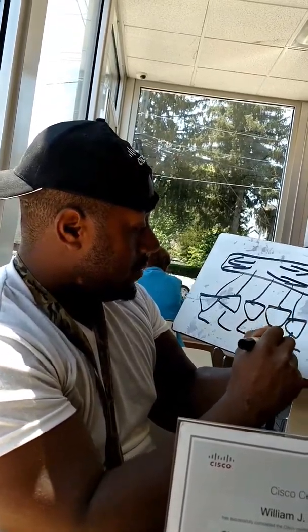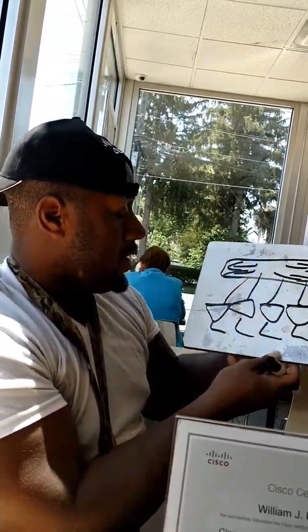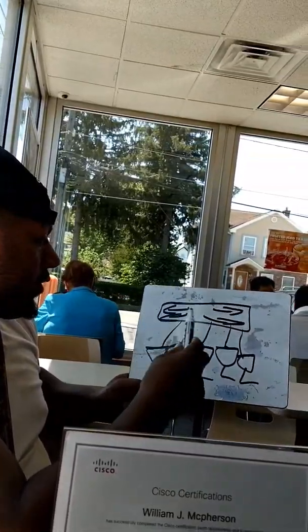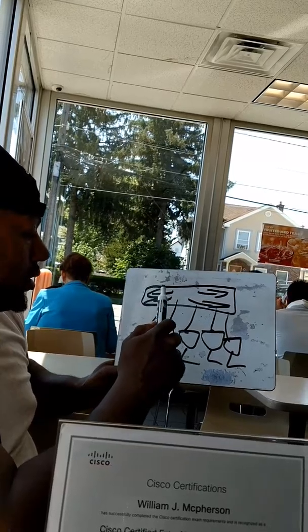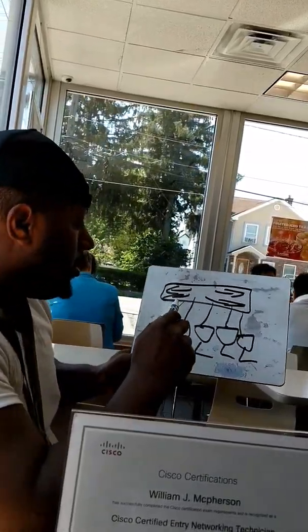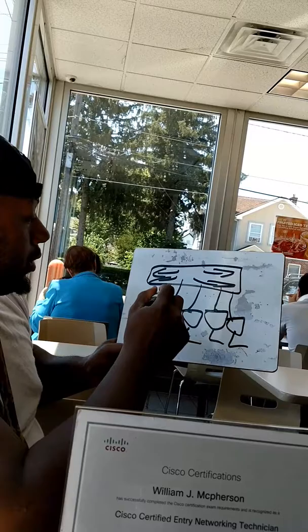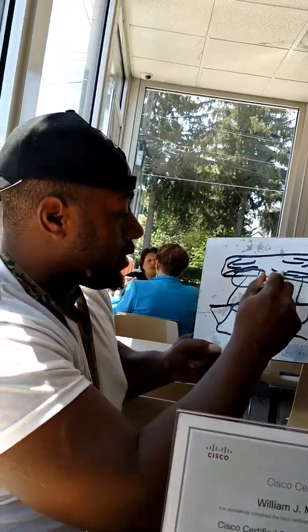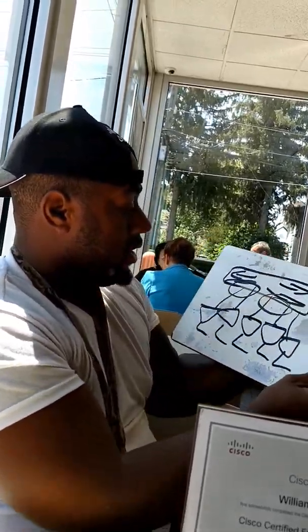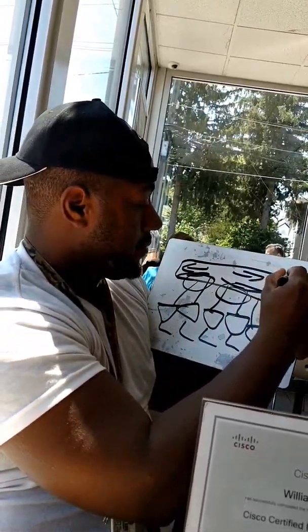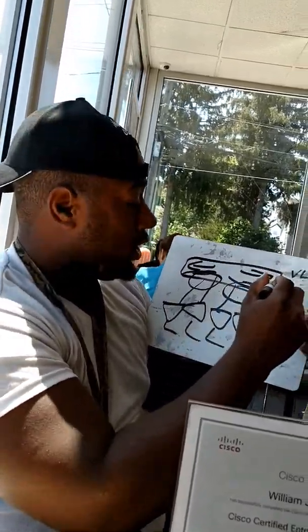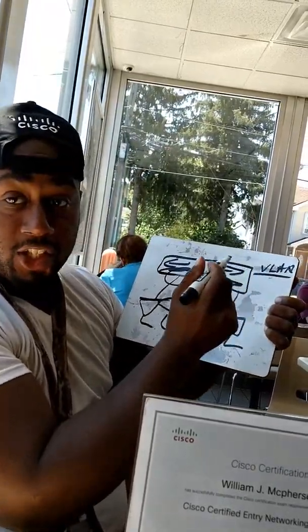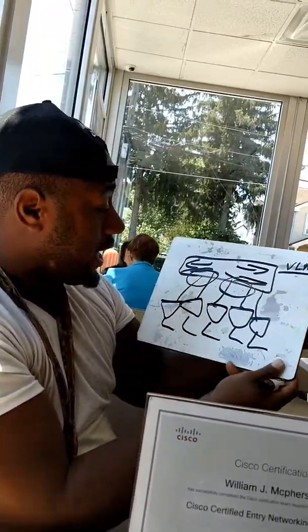These computers, they're in the same broadcast domain — actually, they're in the same collision domain. Now, what you would do to get less traffic on the network is you would group the computers together in a virtual LAN. You would group them together in a virtual LAN, and what it does is it segments the traffic.